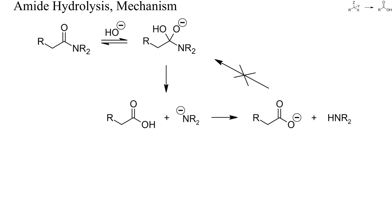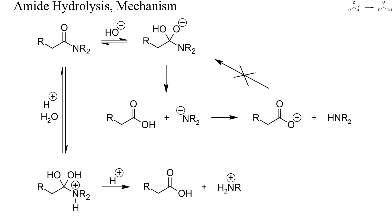Amides are generally more resistant to hydrolysis than esters. The alkaline hydrolysis is particularly difficult, because amines are difficult to deprotonate and amine anions are therefore poor leaving groups. Like the alkaline saponification of esters, however, this reaction is also irreversible. Amides are usually hydrolyzed by aqueous acid and, unlike the acid-mediated hydrolysis of esters, this reaction is also irreversible. One equivalent of acid is consumed and the final products are the carboxylic acid and an ammonium salt devoid of any nucleophilic reactivity.